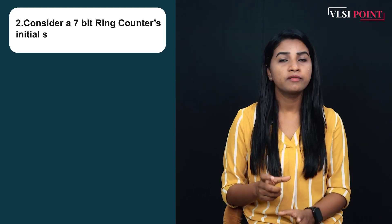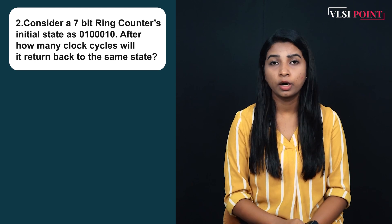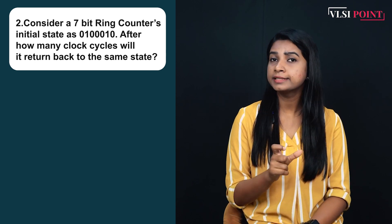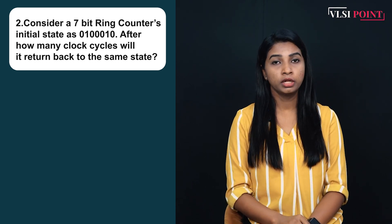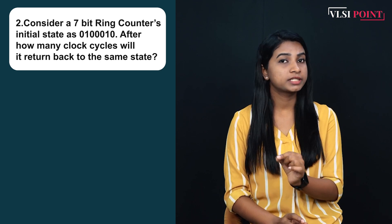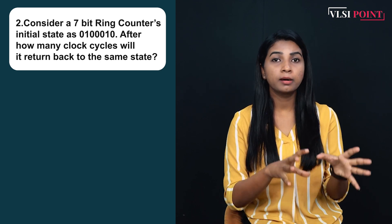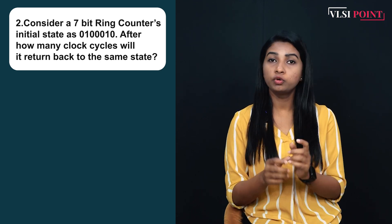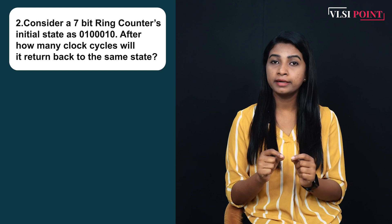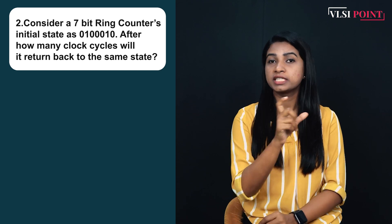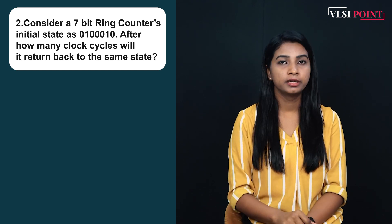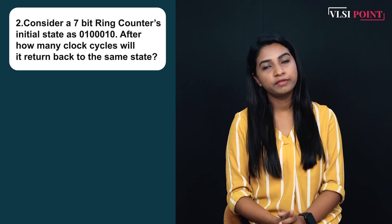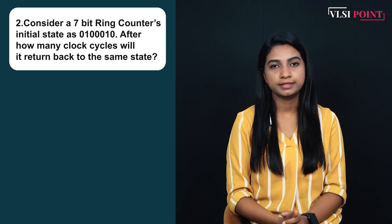Now we can move to the second question. You have a 7-bit ring counter and the current state is 0, 1, 0, 0, 0, 1, 0. So after how many clock cycles will it come back to the same state? You have a 7-bit ring counter — how many clock cycles will be required? Start solving and then we'll go to the solution.